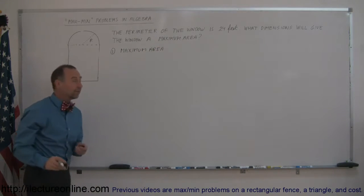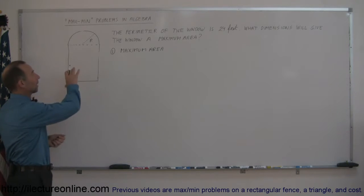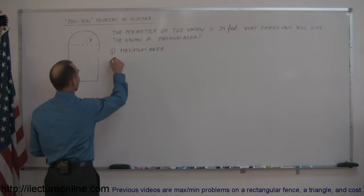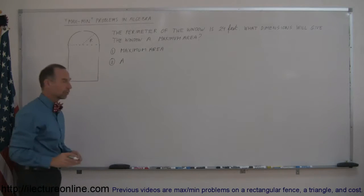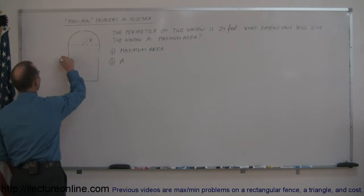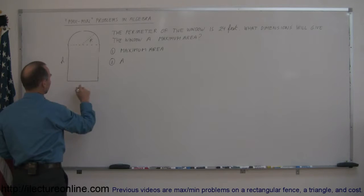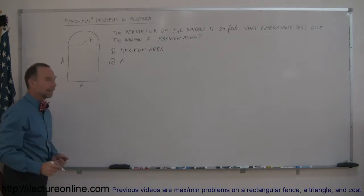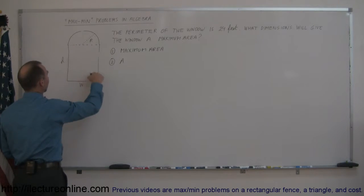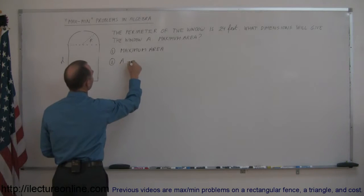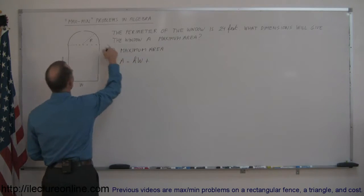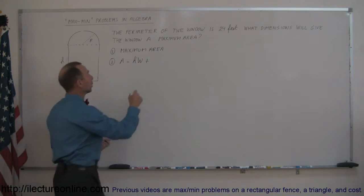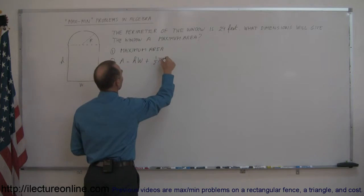The second step is to find an equation to describe the thing you're trying to maximize. In this case we're trying to maximize the area, so we want an equation that says area equals, in terms of all the other variables. Let's call the height of the rectangular portion h, the width of the rectangular portion w, and the radius of the semicircle r. Then the area would be the area of the rectangle, which is h times w, plus the area of the semicircle. The area of the circle is pi r squared, so the area of the semicircle — half of that — would be one-half pi r squared.